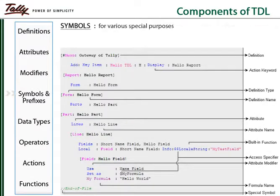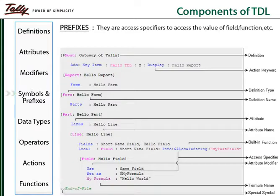There are various symbols in TDL used for specific purposes. For example, the hash symbol is used when reusing an existing definition, and the double semicolon is used before a comment. A number of prefixes in TDL act as axis specifiers — for example, the $ prefix to access a function, and the @ prefix to access a local formula value.